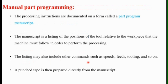The first method is manual part programming. To prepare a part program using this method, the programmer writes the machining instructions on a special form called the part programming manuscript. These instructions are documented precisely, and the NC tape is prepared directly from this manuscript. The manuscript differs for two-axis point-to-point operations versus three-axis contouring machines.